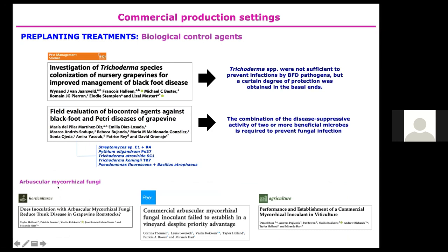Research by the group of Miranda Hart and collaborators mostly in Canada demonstrated that colonization by arbuscular mycorrhizal fungi did not suppress black foot pathogens but instead increased their abundance. Commercial arbuscular mycorrhizal fungi also failed to establish in the vineyard despite priority advantage. More research is needed to assess the efficacy of these products against trunk disease pathogens.